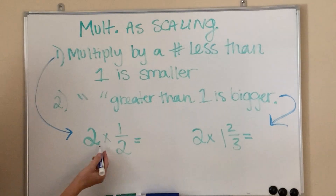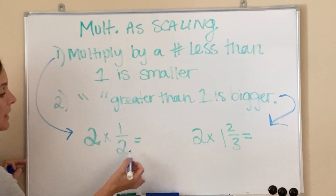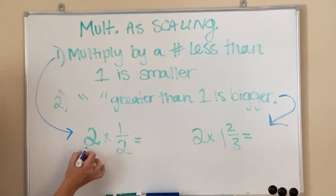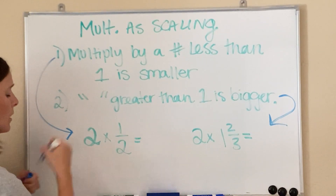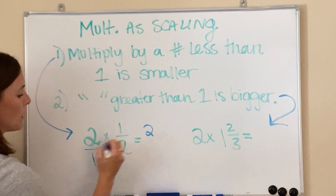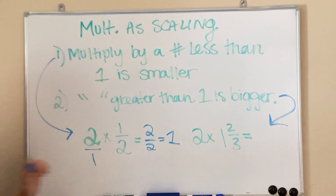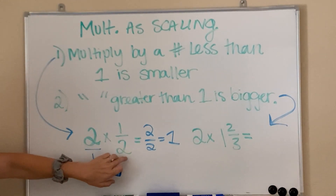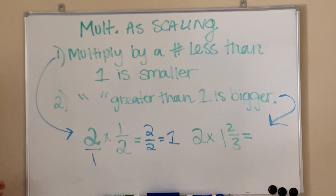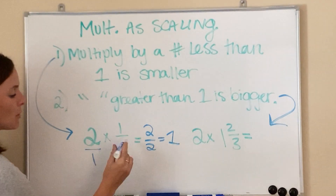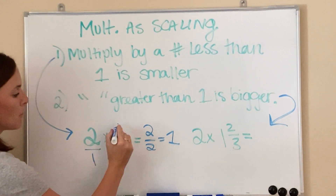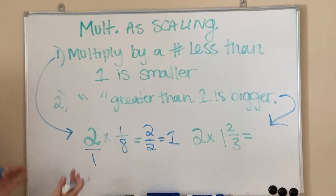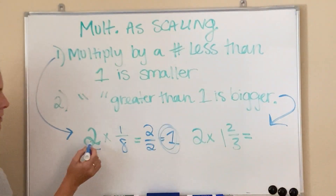The rule is: if you take any number and multiply it by a number less than one, you're going to have an answer that's smaller than that number — smaller than two. That is true because if I take two and multiply it times one half, I multiply straight across: two times one is two, and one times two is two, so two divided by two is one. Isn't one smaller than my whole number? That's why the rule applies. Whether I multiply by a half, a third, four out of six, or one out of eight — all of those fractions are smaller than one — the answer will always be smaller than the whole number.